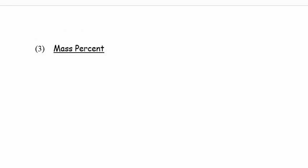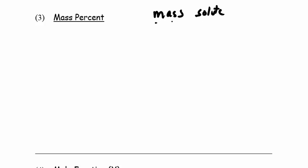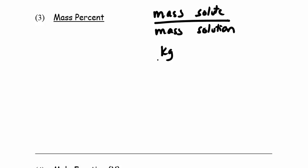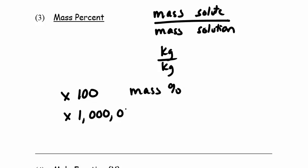The next unit is mass percent, which is a ratio of masses. It's part of a general category called parts by mass. It's given by the mass of the solute over the mass of the solution — as always, solute on top — and it's generally multiplied by 100 to give mass percent. If you multiply that ratio by a million, you get parts per million, and multiplying by a billion gives you parts per billion, which you may have heard of.